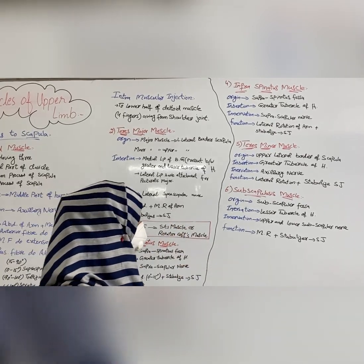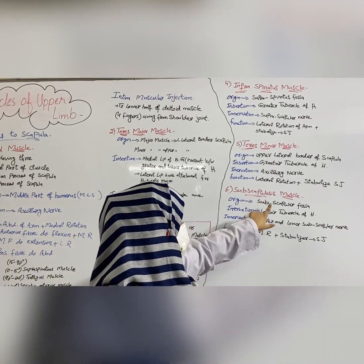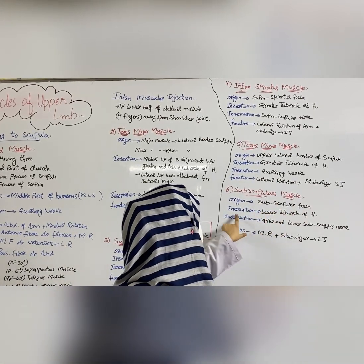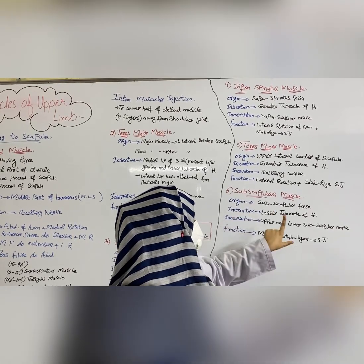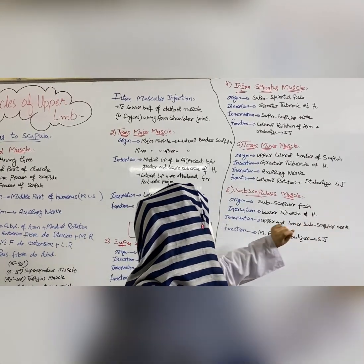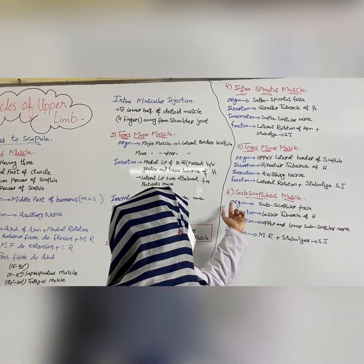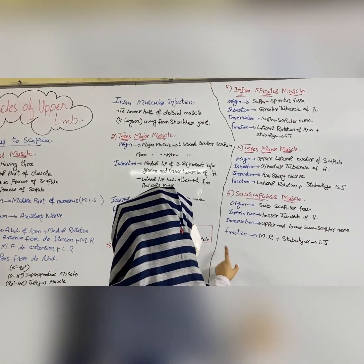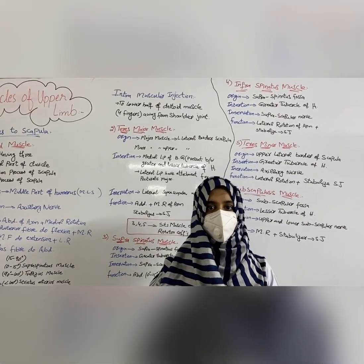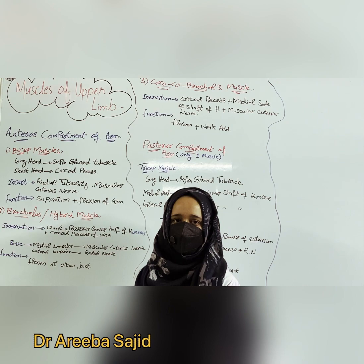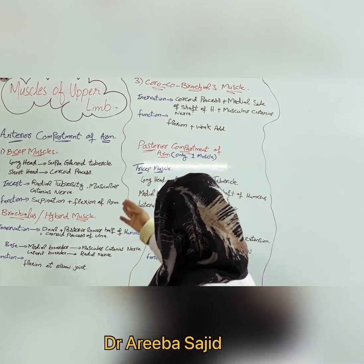The sixth muscle is the subscapularis. Its origin is the subscapular fossa, and its innervation is the upper and lower subscapular nerves. Its insertion is the lesser tubercle of the humerus. Its function is medial rotation, and it also stabilizes the shoulder joint. Now I will explain the anterior compartment of the arm.